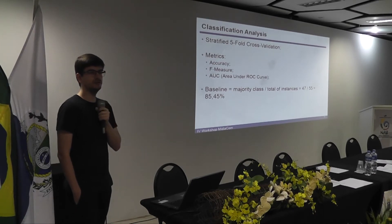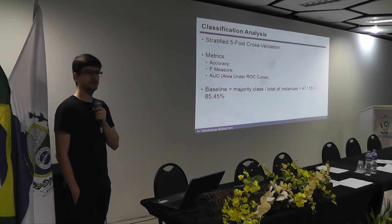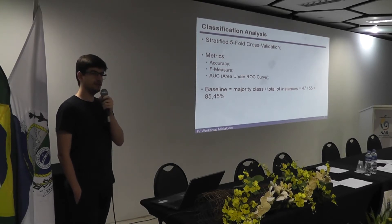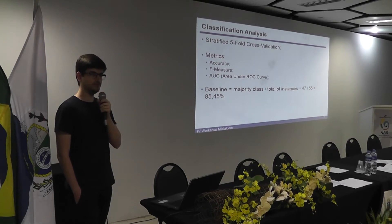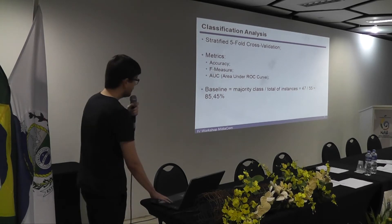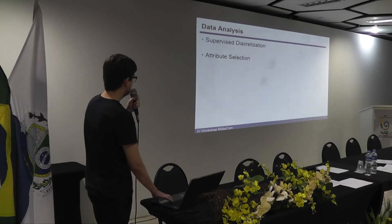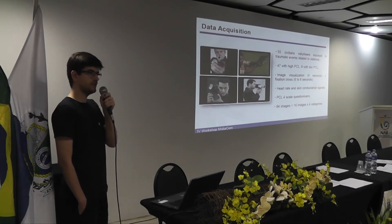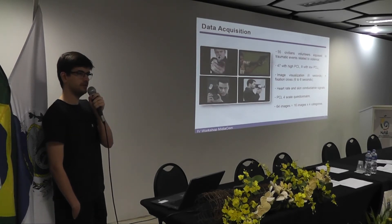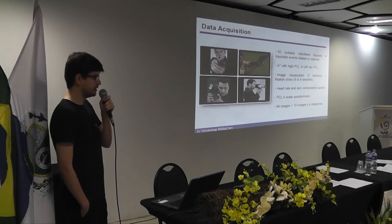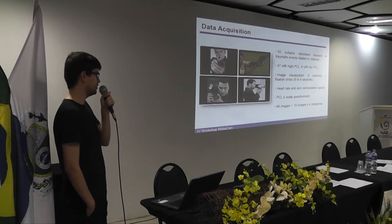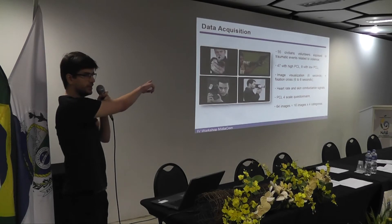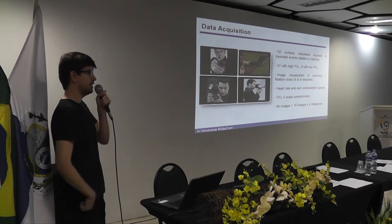An audience member asked how unbalanced the dataset is — how many positive and negative cases? The presenter responded: the majority class is almost six times bigger than the minority class, so 47 with low PCL and 8 with high PCL.